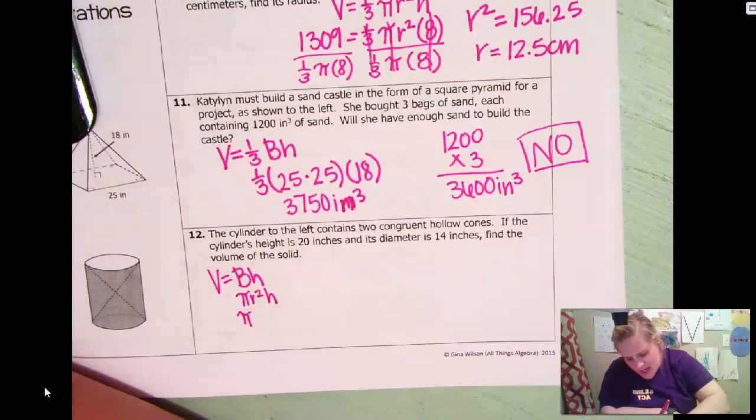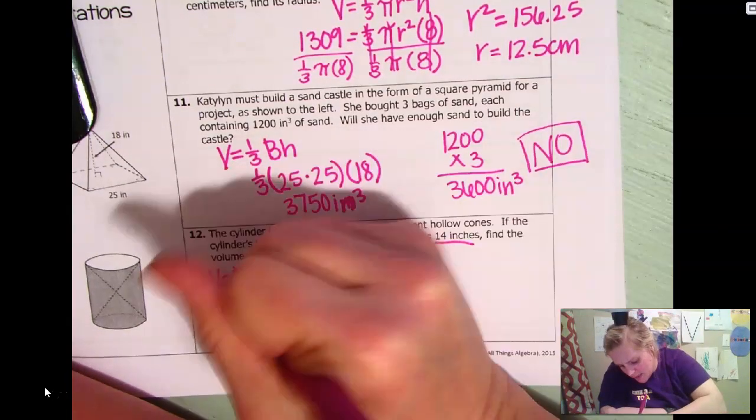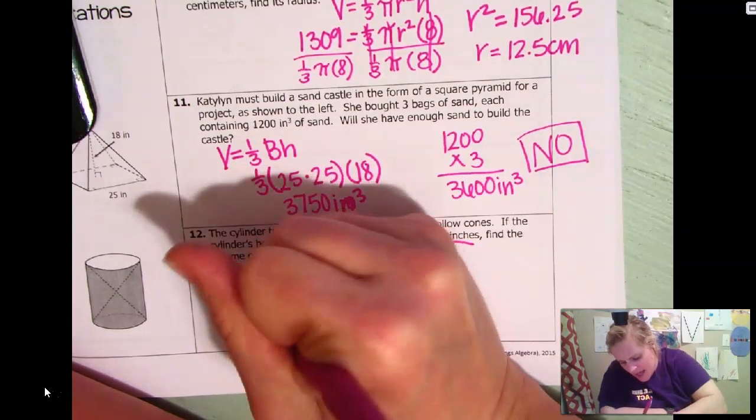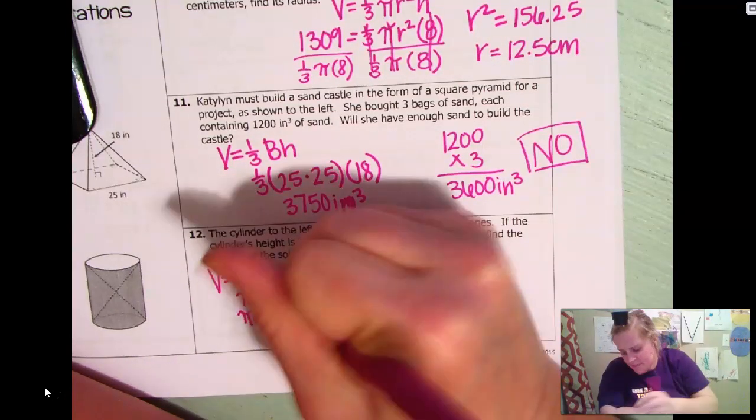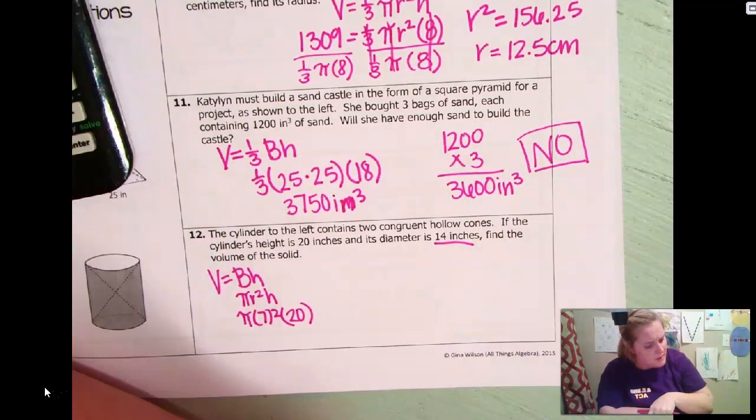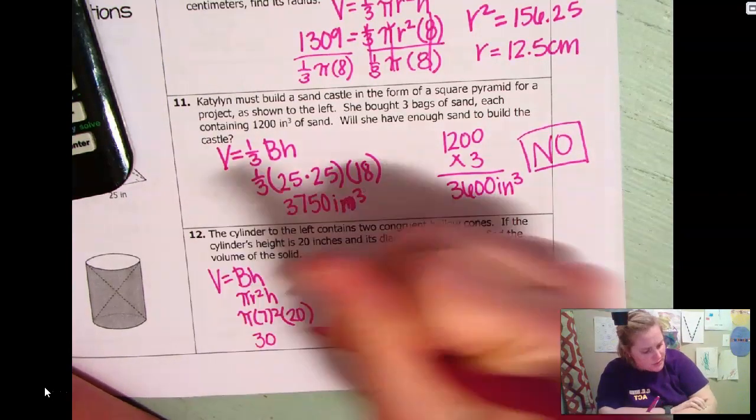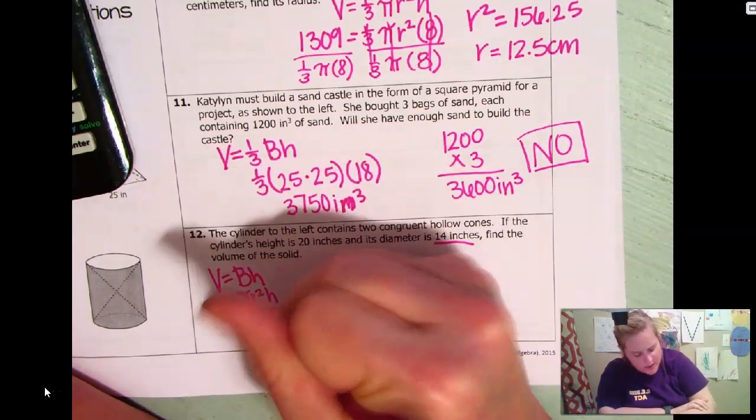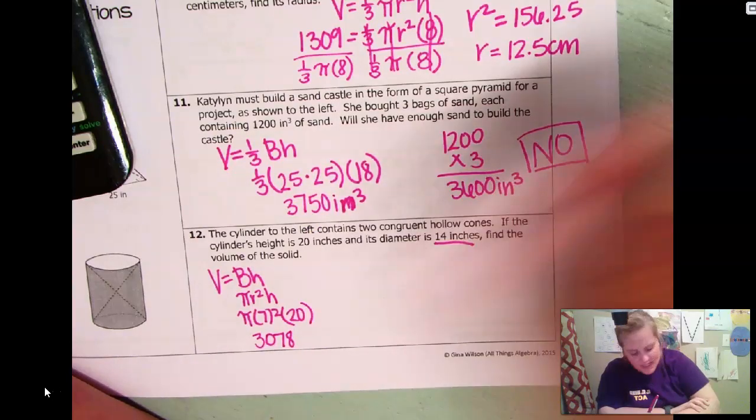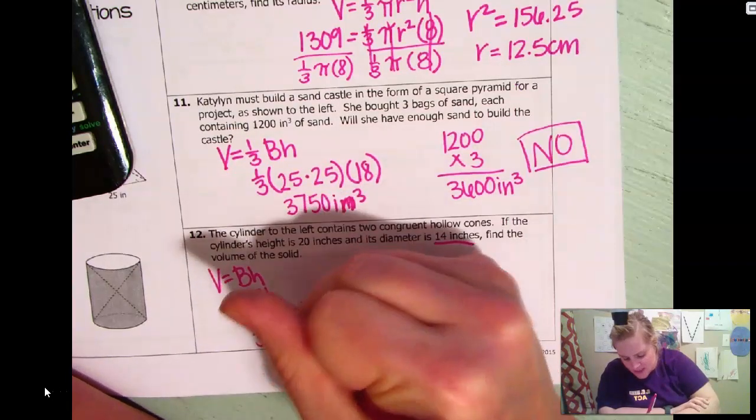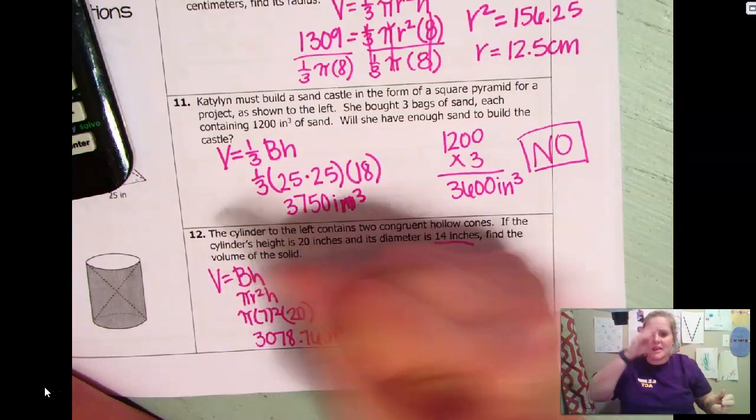It tells us our diameter is 14. So that means the radius is seven and the height is 20. Okay. I'm going to just cheat and look at my key 3,007, no, no, 3,078 and 76 inches cubed. So that would be the entire cylinder.